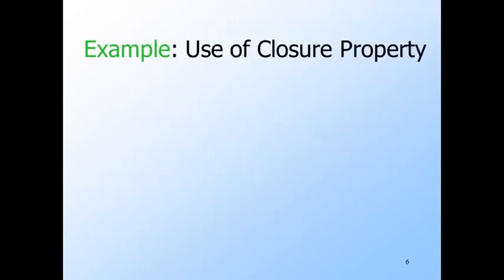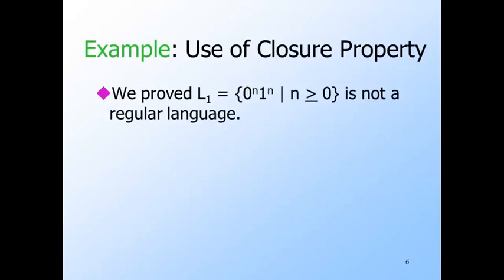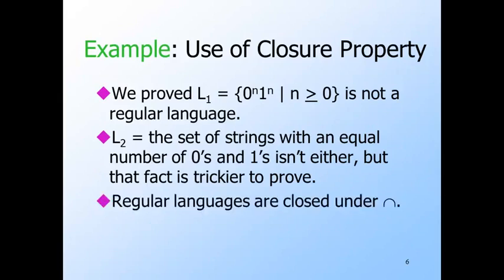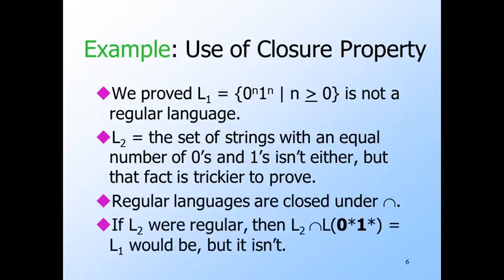Here's an example of how closure properties prove useful. We proved using the pumping lemma that L1, the set of strings of zeros followed by an equal number of ones, is not a regular language. L2, the set of all strings with an equal number of zeros and ones, isn't regular either. However, suppose L2 were in fact regular. Then since regular languages are closed under intersection, the intersection of L2 with the language of the regular expression zero star one star would also be regular. The language of zero star one star is all strings with any number of zeros followed by any number of ones. The intersection of L2 with this language is L1, because L2 forces the number of zeros and ones to be equal, while the language of zero star one star forces all the zeros to precede all the ones.